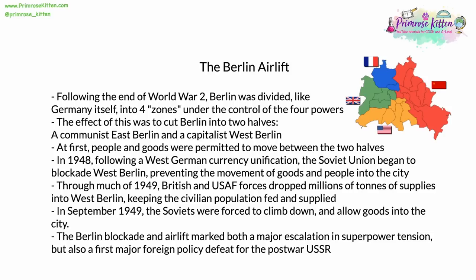However, in 1948, currency unification happened in West Germany, where the three Allied zones controlled by France, the United Kingdom, and the United States began to merge, slowly but surely becoming a West German state. In reaction, the Soviet Union blockaded West Berlin, preventing the movement of both goods and people into the city. Through much of 1949, British and US Air Force forces dropped millions of tons of supplies into West Berlin, keeping the civilian population supplied and fed. By September 1949, the Soviet Union was forced to climb down and allow goods into the city. The Berlin blockade and the subsequent airlift marked both a major escalation in superpower tensions and the first major foreign policy defeat after World War II for the Soviet Union, making it the first major post-war flashpoint between the two superpowers.